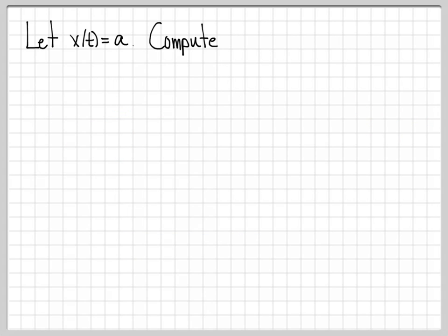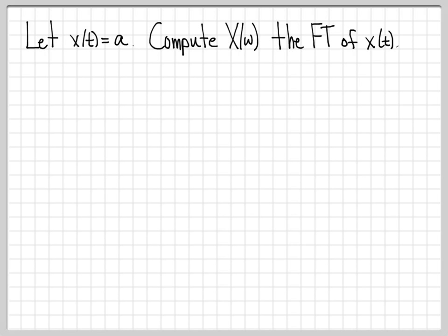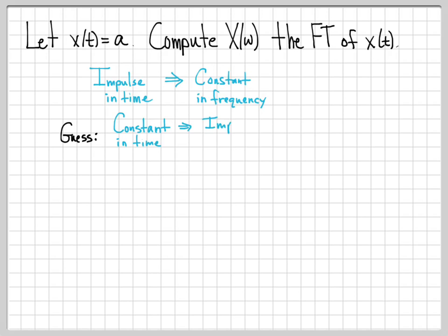Now let's work this the other way. Let's work with the signal x of t equals the constant a. In the last problem, we had an impulse in time and got a constant in frequency. Now we start with a constant in time and compute its Fourier transform. Based on time-frequency duality in linear systems and Fourier analysis, we guess that x of omega will be some type of impulse in the frequency domain, but we need to verify that rigorously and mathematically.